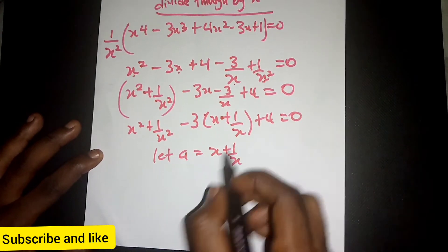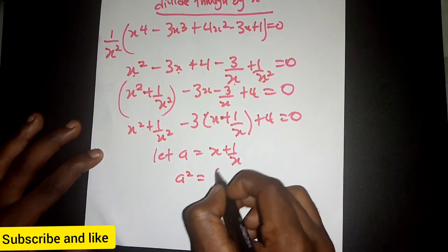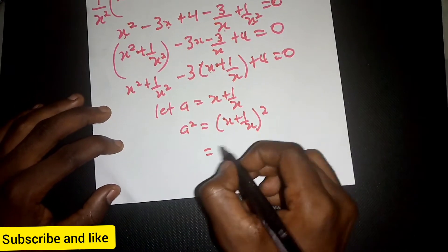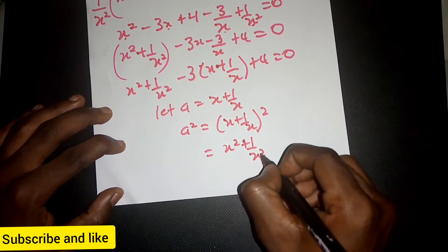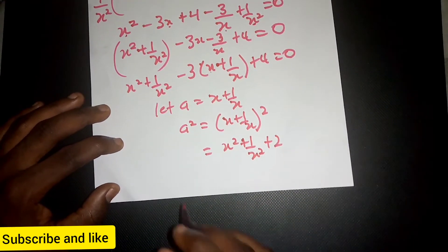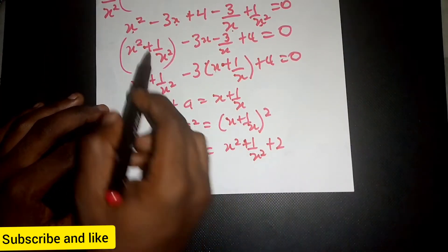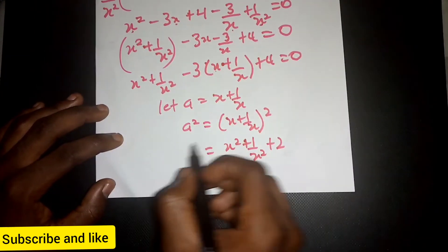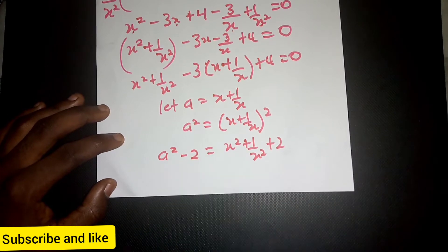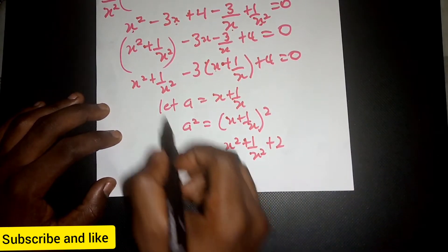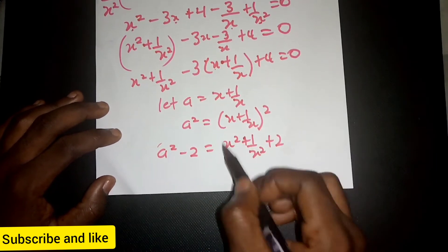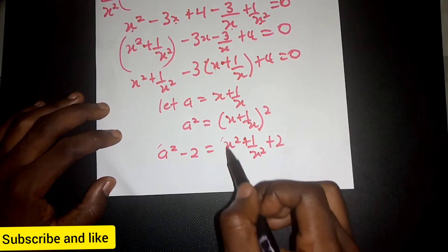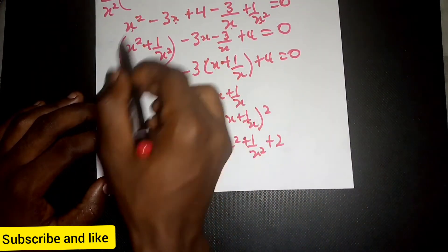If a equals s plus 1 over s, then what about a squared? When we expand a squared, we get s squared plus 2 plus 1 over s squared. Now the expression s squared plus 1 over s squared corresponds to what we have, but we have a positive 2 extra. So s squared plus 1 over s squared equals a squared minus 2.